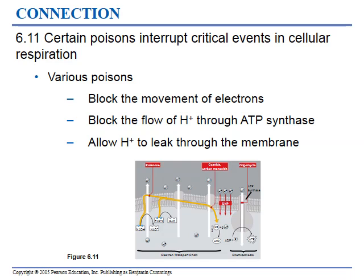Certain poisons block the electron transport chain. Cyanide and carbon monoxide bind to an electron receptor, preventing electrons from ending up at oxygen. When the electrons don't reach that endpoint, we never pump the hydrogen ions out, blocking ATP production. There's another one called oligomycin, which actually blocks the ATP synthase directly so that hydrogen cannot flow through and create ATP.